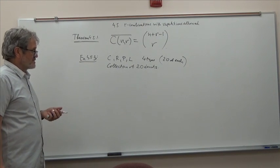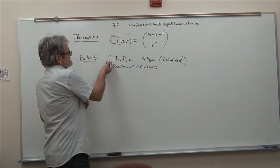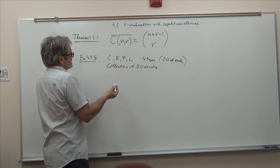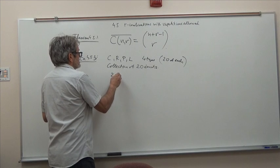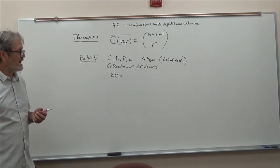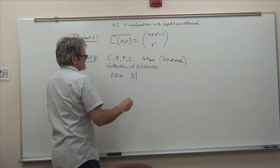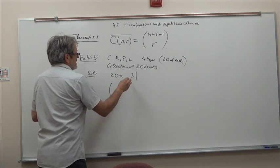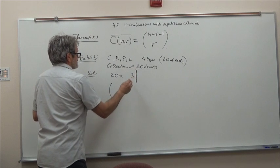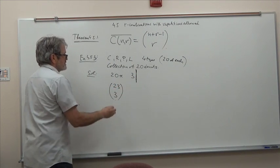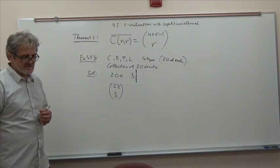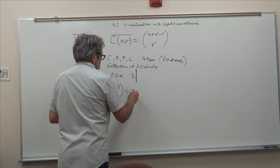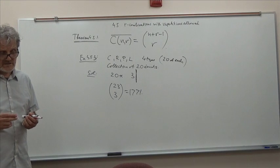Basically, that's the same as solving an equation, because C stands for x₁, R for x₂, P for x₃, L for x₄. What do I do? I have 20 stars because I have 20 donuts - for each donut I say star. There are 4 varieties, I have 3 bars for stopping. So the solution is: altogether there are 23 symbols, I need to choose where to place 3 stoppers. That would be 23 choose 3 = 1771.